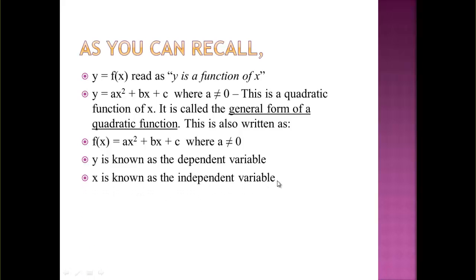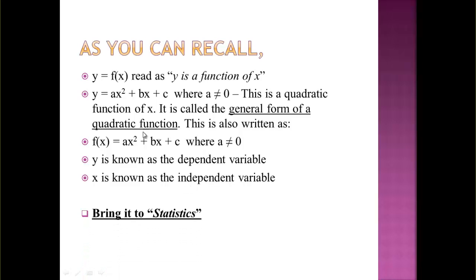X is known as the independent variable. The cheeseburgers are independent — you go and get them to gain weight. Then your weight is dependent on the cheeseburgers. You can even extend this: diabetes is a function of weight, and weight is a function of the number of cheeseburgers you eat.